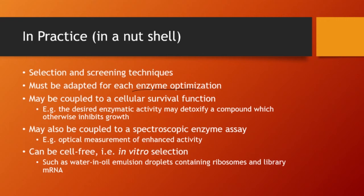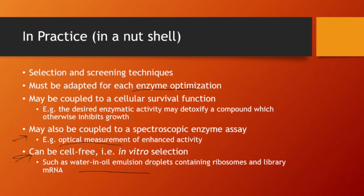One approach couples with cellular survival functions — if a desired enzymatic activity can detoxify and rescue a cell, you use a cellular-based screening where cells that survive carry the high-activity enzyme. Another idea couples with optical measurements or fluorescent proteins that generate a signal when there is enhanced activity. It can also be cell-free — an in vitro selection using emulsion droplets containing ribosomes, library mRNA, to do the screening. Enzyme selections are a little different from just looking for a binder, because we need the activity. If you just want to select something that binds with no activity, you do directed evolutions of other protein ligands — that's a key difference.